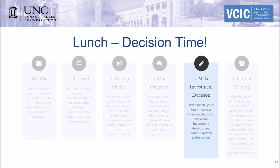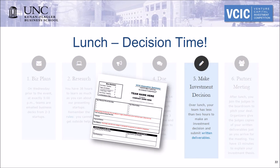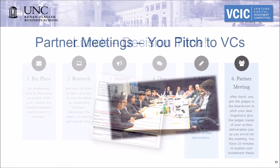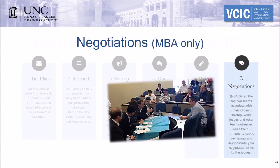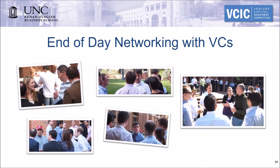Over the lunch break, your team will have less than two hours to make a final investment decision about which startup you're choosing. Then, after lunch, your team meets with the judges to explain your decision-making process. This session is like a VC firm's Monday morning partner meeting. At the MBA level, the top two teams get to negotiate a term sheet with the startup they chose. The day ends with an extended networking session with the venture capitalists.